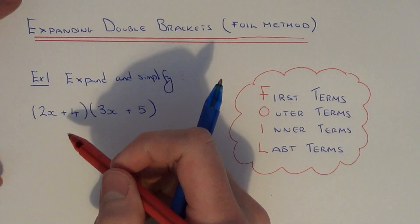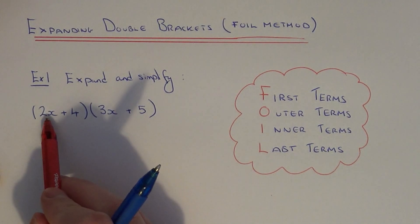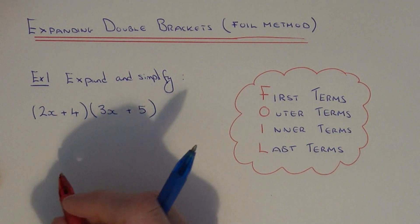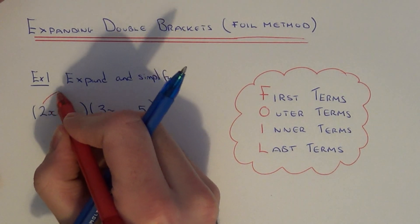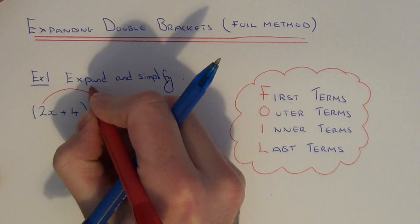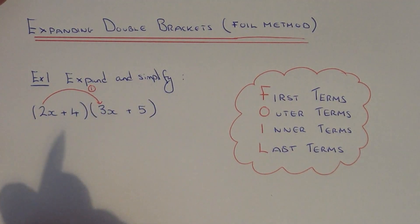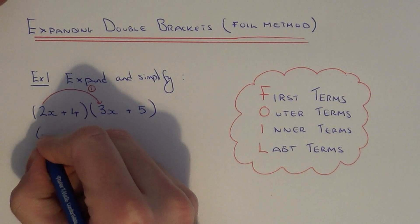Let's have a look at example one. First of all we need to expand and simplify 2x plus 4 bracket 3x plus 5. Let's multiply the first terms in each bracket together first of all. 2x multiplied by 3x is 6x squared.